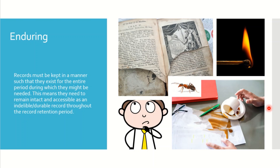The next is Enduring. Enduring means your document should be retained for a longer duration as per the document retention policy. Records must be kept in a manner such that they exist for the entire period during which they might be needed — remaining intact and accessible as a durable record. Documents should be protected from fire, insects, liquids, and solvents, and stored so they are not damaged during the retention period.